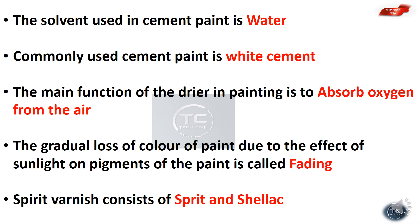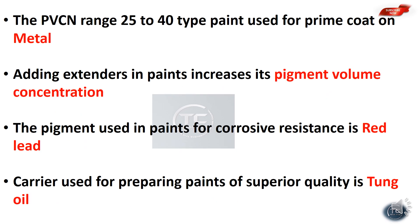Paint with a PVC in the range of 25–40 is used for prime coat on metal. Adding extenders in paints increases the pigment volume concentration (PVC) value.